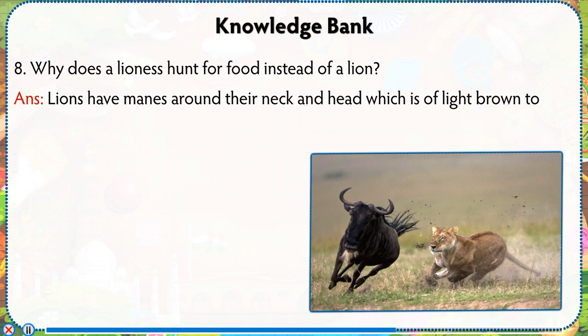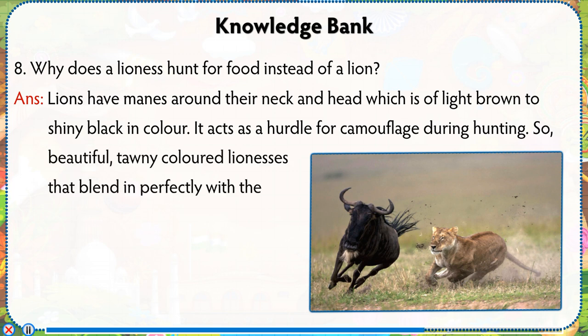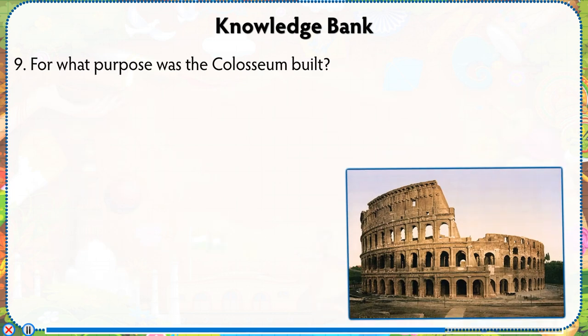Number 8: Why does a lioness hunt for food instead of a lion? Answer: Lions have manes around their neck and head, which range from light brown to shiny black. It acts as a hurdle for camouflage during hunting. So the tawny-colored lionesses, which blend in perfectly with the surroundings, hunt for the pride. However, young nomadic lions hunt for themselves.